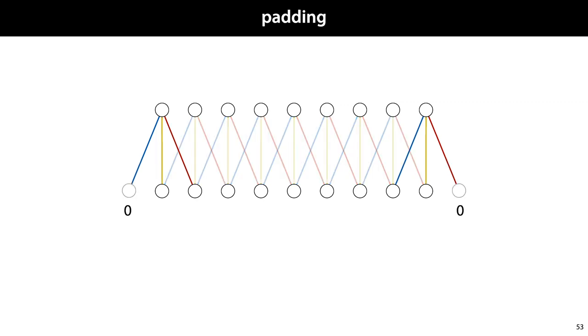To remedy this problem, we can add padding. Extra nodes added to the input, usually with a fixed value set to zero. Because of this padding, the number of output nodes is now the same as the number of input nodes before we added the padding.